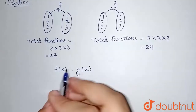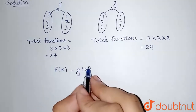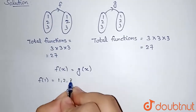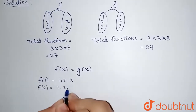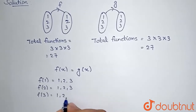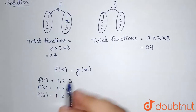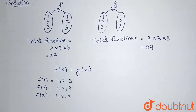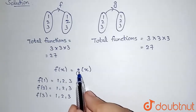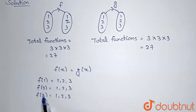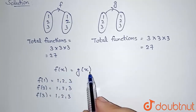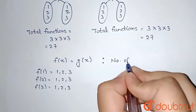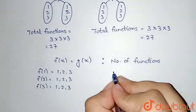We need f(x) = g(x) for at least one x. If we fix the value of f(x), then g(x) is fixed. So f(1) can be 1, 2, or 3; f(2) can be 1, 2, or 3; f(3) can be 1, 2, or 3. If f(1) = 1, then g(1) must also equal 1, meaning g(x) is fixed at that point.